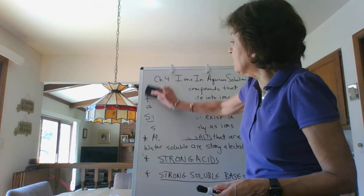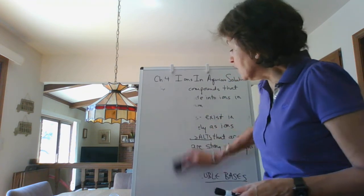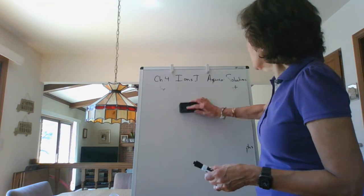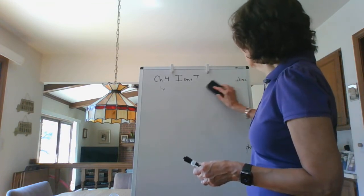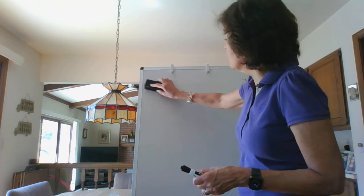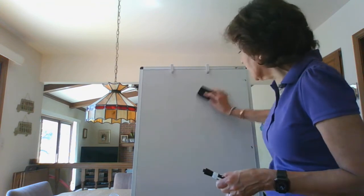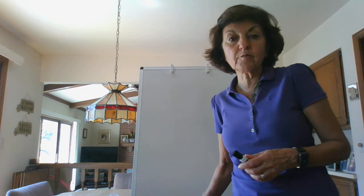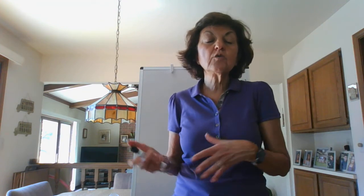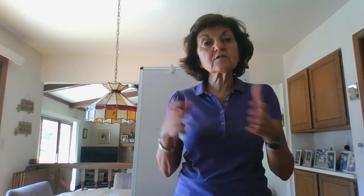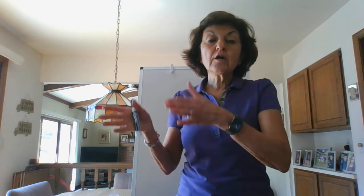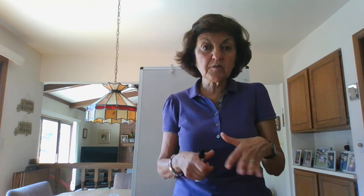Why do we care about strong electrolytes? Because we're going to learn how to create different types of chemical equations. The equations you've always been writing in chemistry have been molecular equations or formula unit equations. In this chapter we're going to learn how to break those apart into complete ionic equations and then into net ionic equations — three different types we'll be working with.